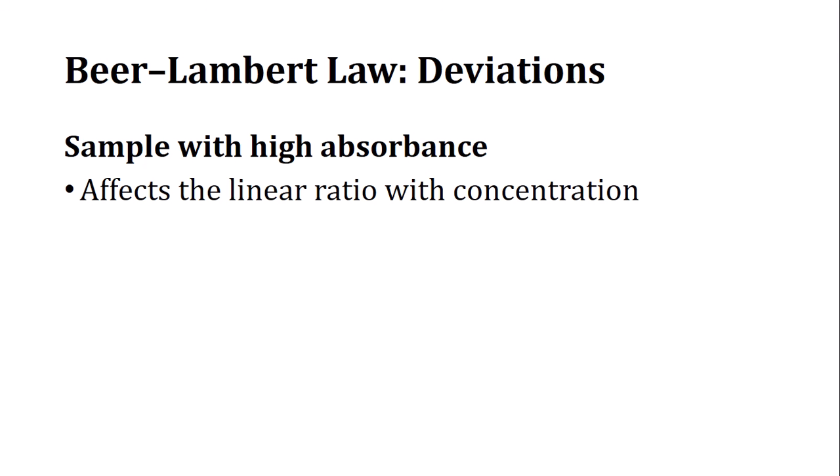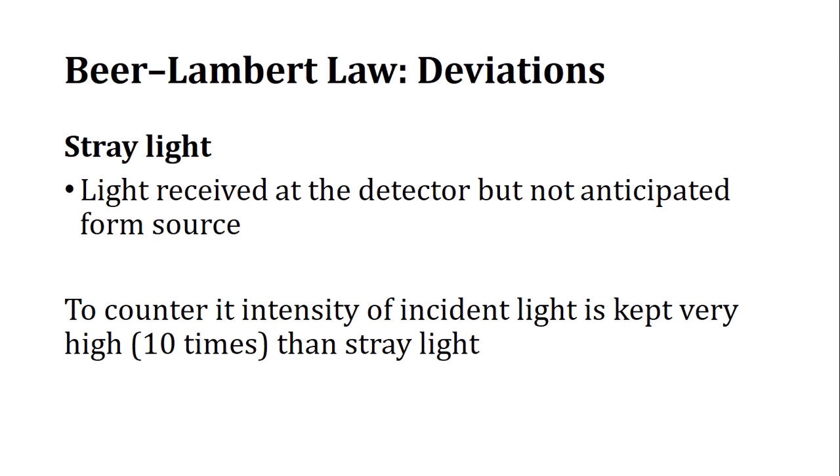Another problem is stray light. If any instrument has some extra stray light, that stray light may reach the detector and affect the actual reading. To address this, we concentrate on light coming only from the source and increase the intensity of the source light so that the effect of stray light is minimized.